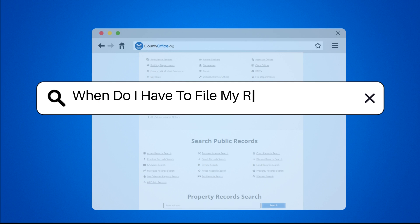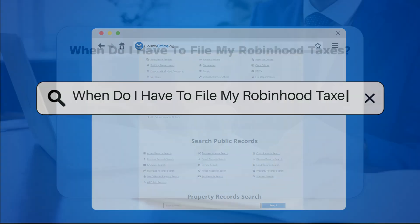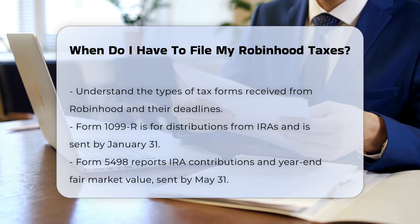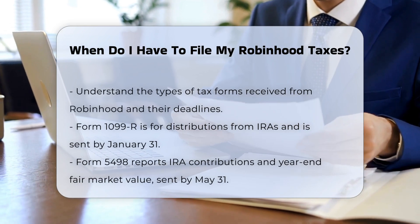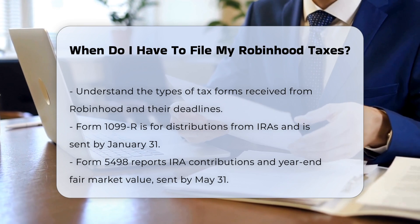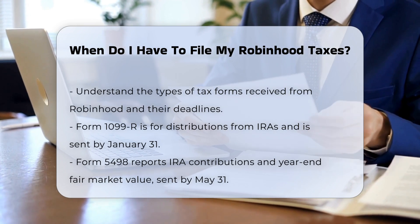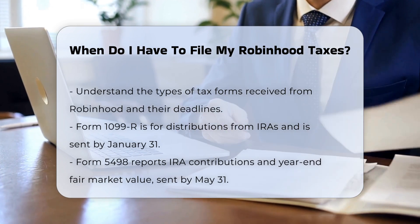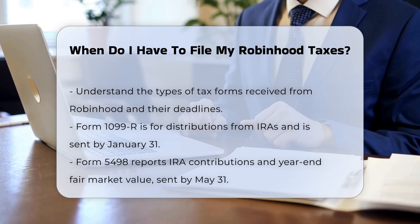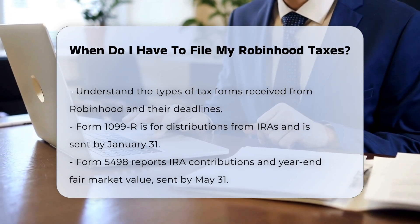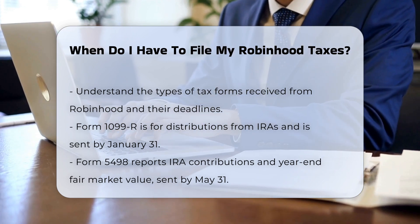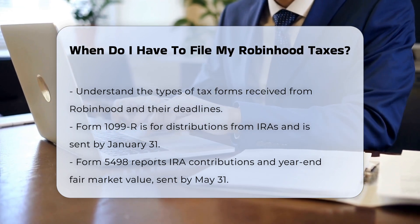When do I have to file my Robin Hood taxes? To understand when you need to file your Robin Hood taxes, it's essential to know the types of tax forms you might receive and their respective deadlines. Here are some key points to consider. Form 1099-R: this form is required for distributions from Individual Retirement Accounts (IRAs), and must be sent by January 31st for the preceding tax year.